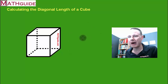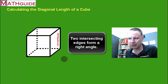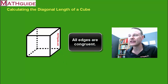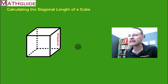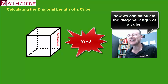Any two edges that are touching are at 90-degree angles from each other — so intersecting edges are at right angles. And of course all edges are equal because it's a cube; it's not just any old prism. I think we now have enough information to find the diagonal of a cube.